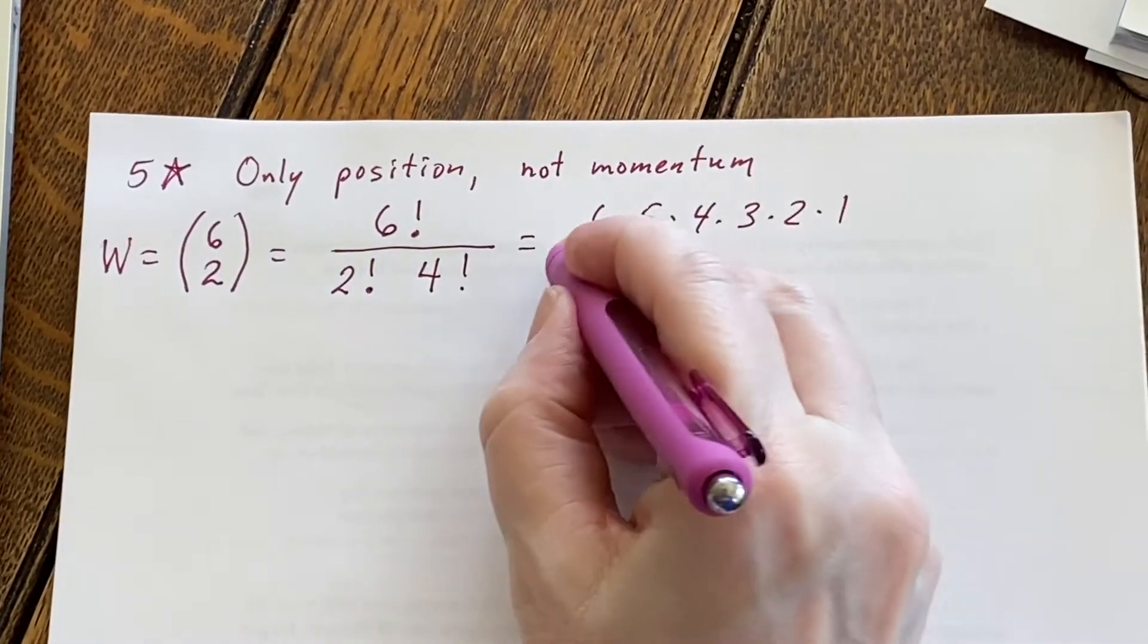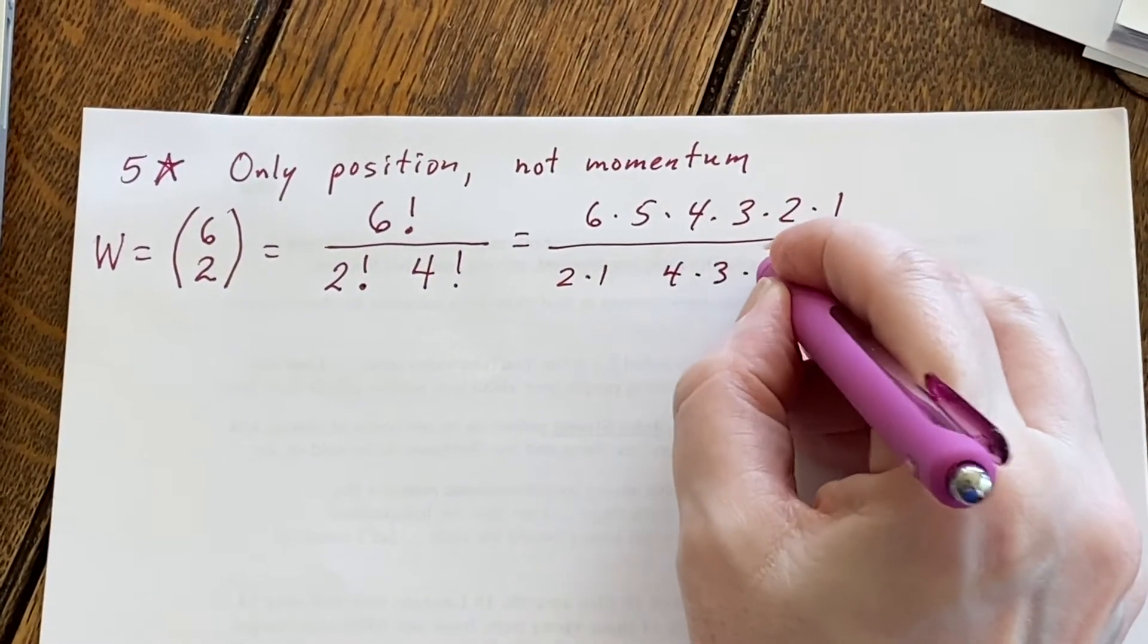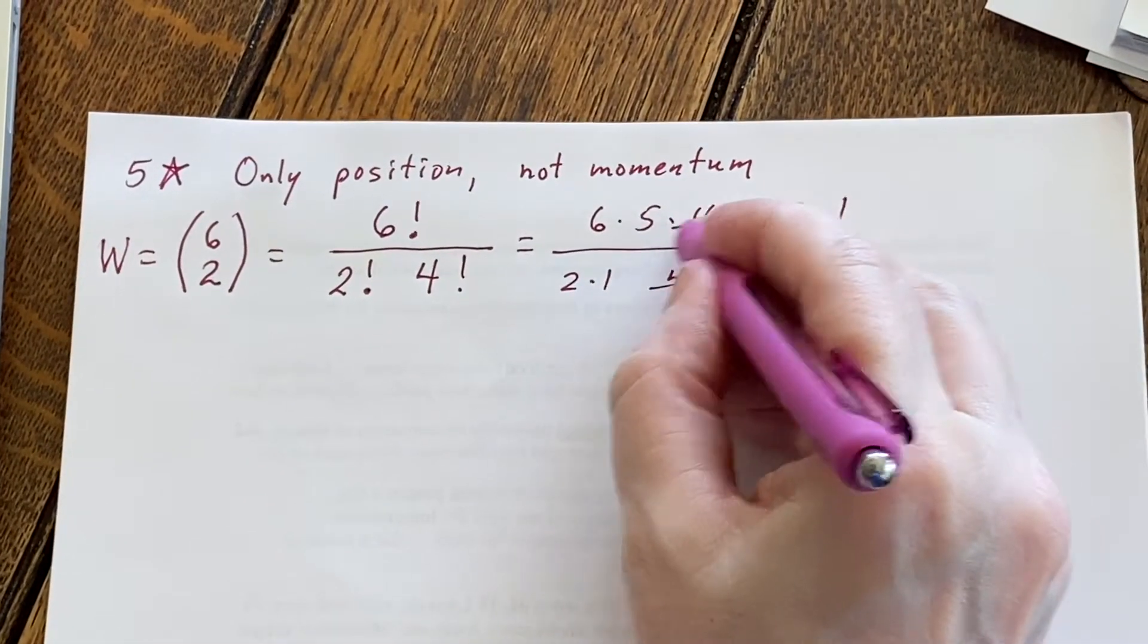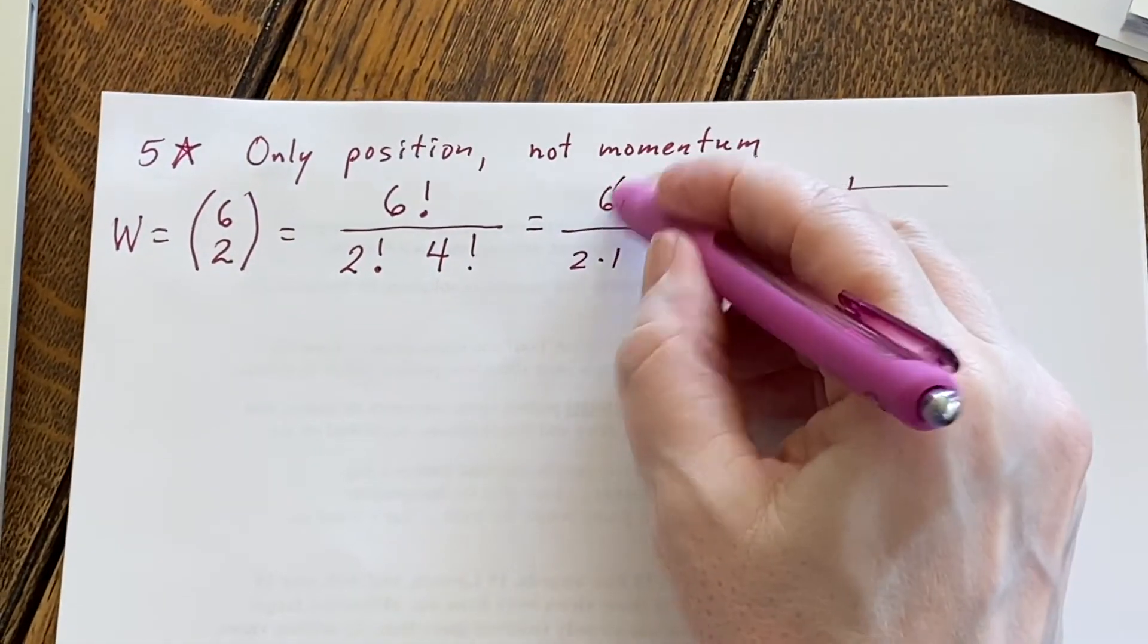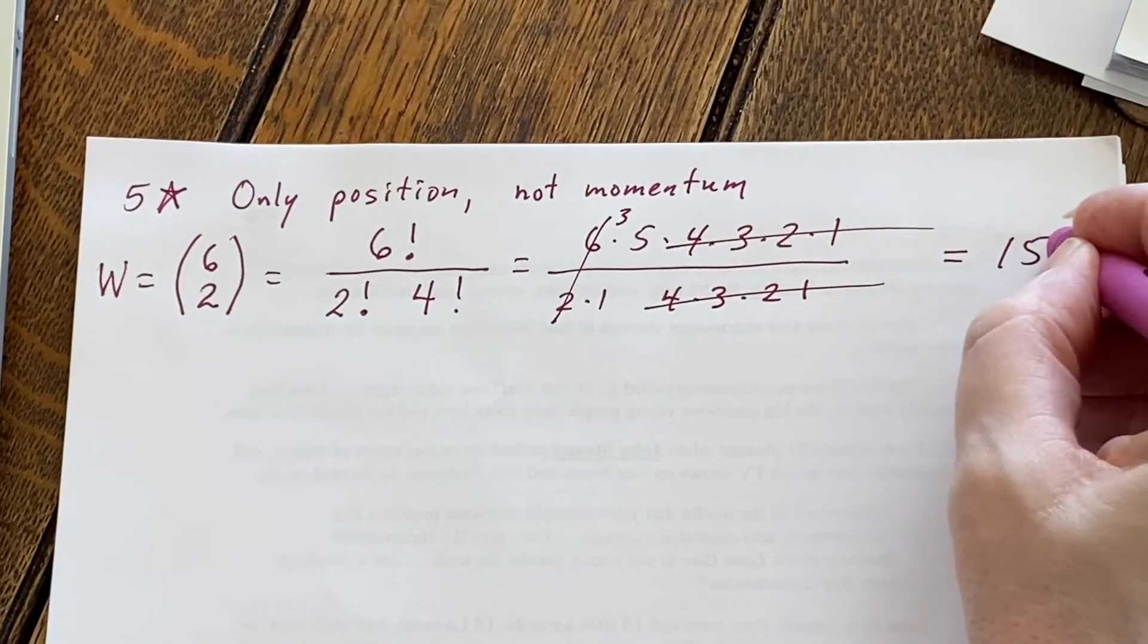And then I can just write them down. There's six factorial. Two factorial is this. Four factorial. Oh, look at this. Those are all going to cancel with these. Then you could cancel here and you'd end up saying that the answer was 15.